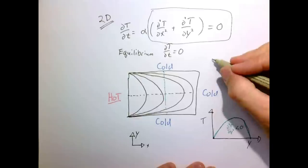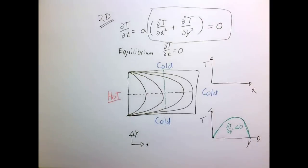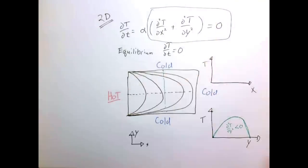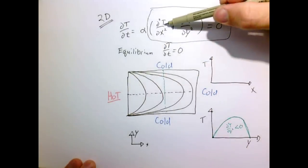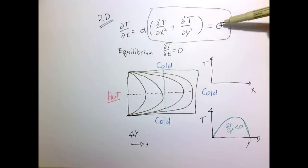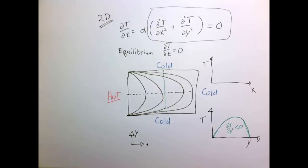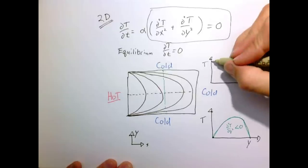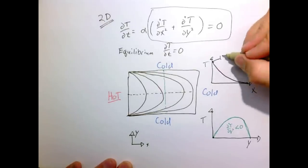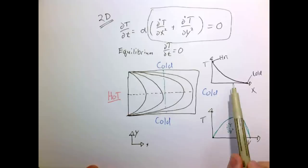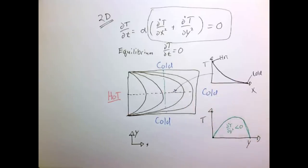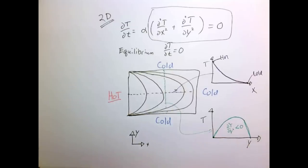If we take a line and plot the temperature as a function of x, our equation says the second derivative of temperature with respect to x plus the second derivative with respect to y must equal zero. That tells us, since the second derivative with respect to y is negative, the second derivative with respect to x must be positive. So our temperature field has to curve such that the hot temperature is at the center and cold at the ends — a positive curvature along x.